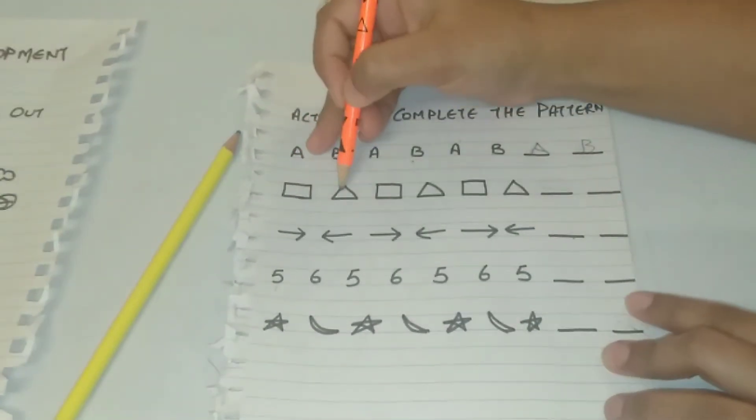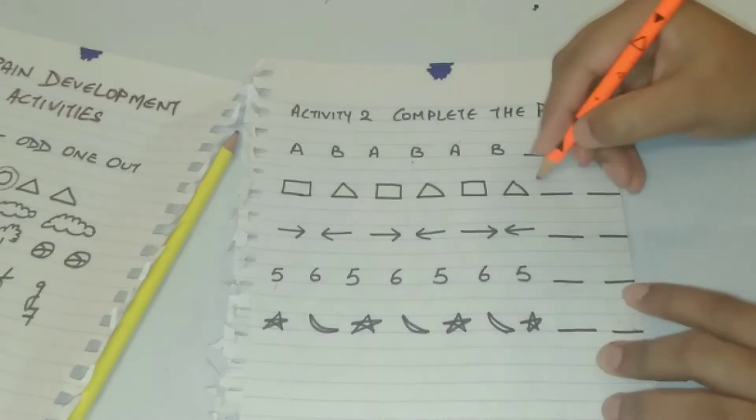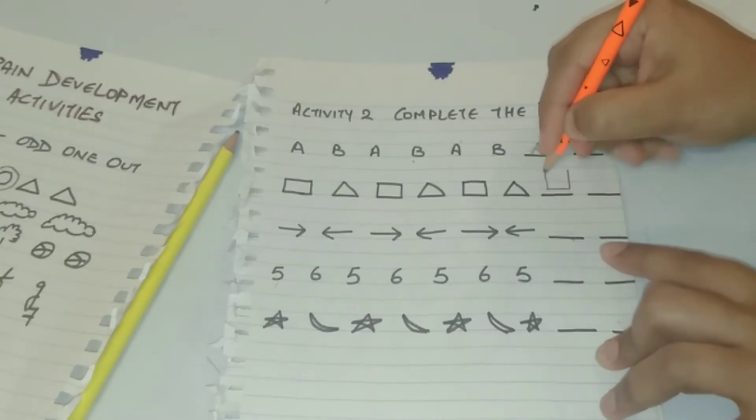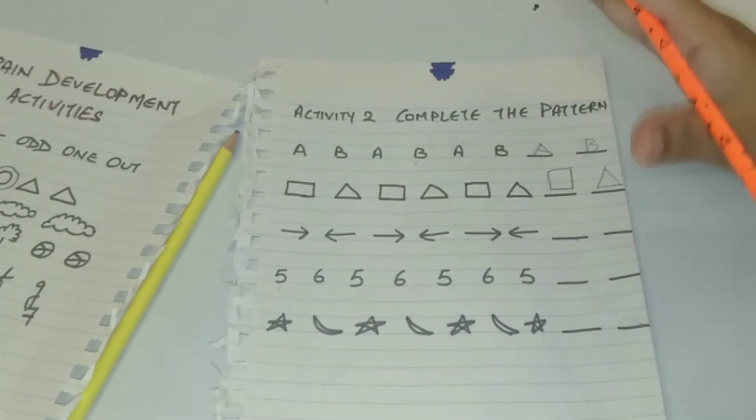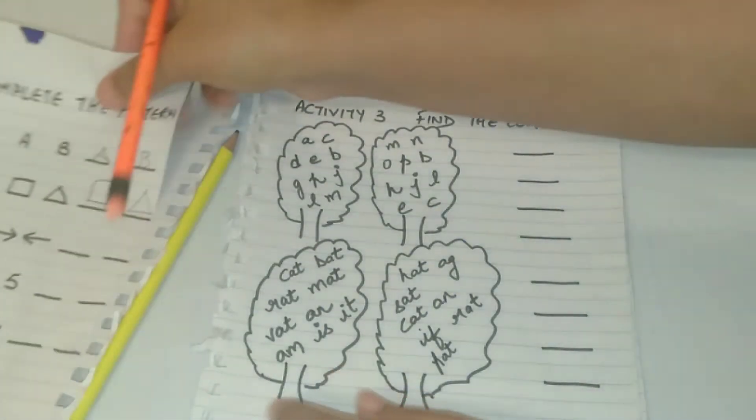The second pattern is square, triangle, square, triangle, square, triangle. The other one will be square and it will be finished on triangle. So these activities are quite good for the kids.